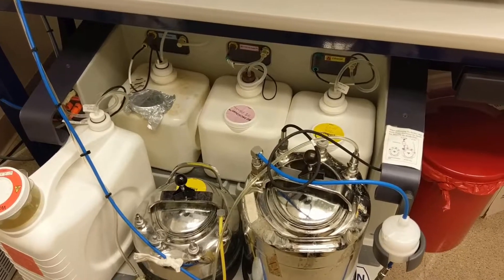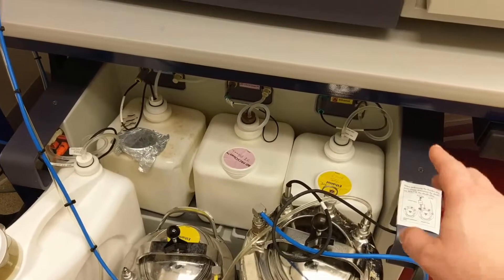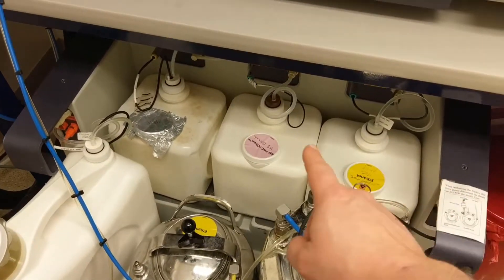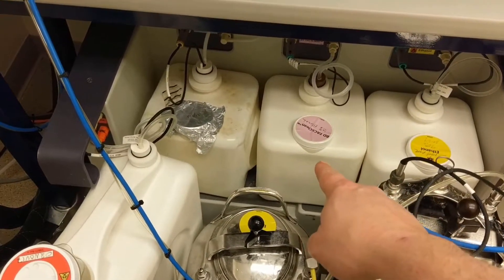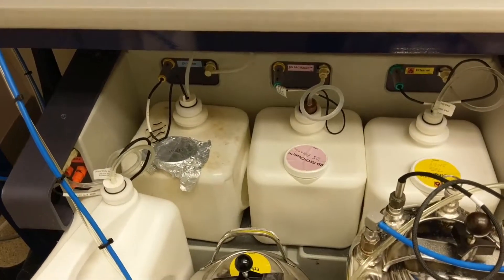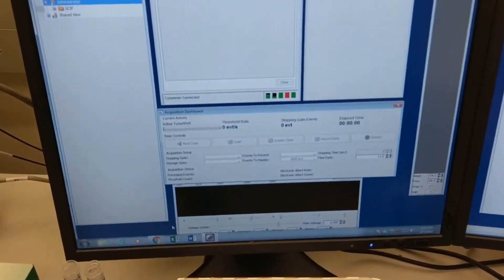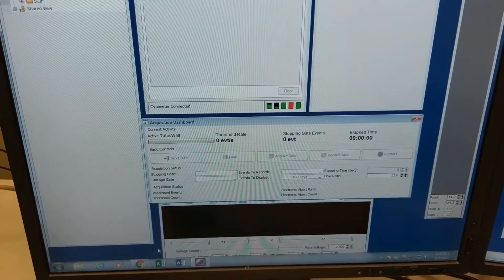In this video I want to demonstrate for the FaxAria cell sorter what you would do if you've filled up all your cleaning tanks, your ethanol tank, your FaxClean or 10% bleach tank, and your water tank, and you know everything's connected properly and full, but when you come into your Diva software you see that it's reading that one of your tanks is actually empty.